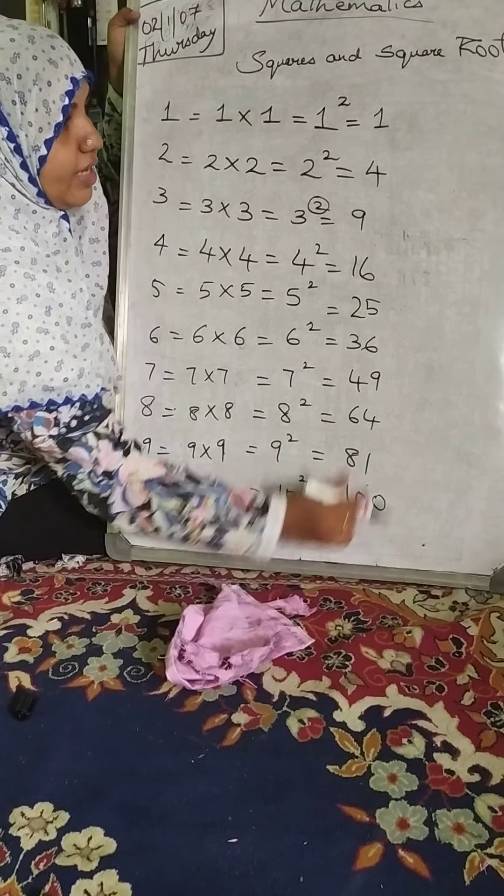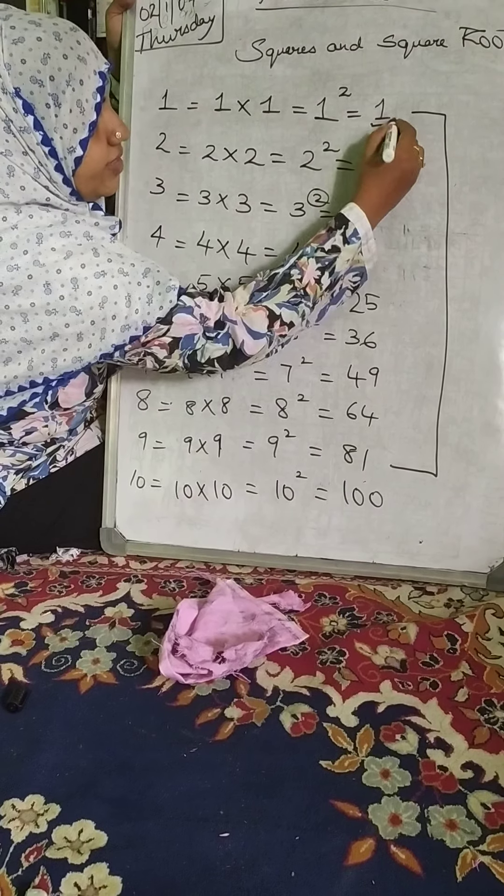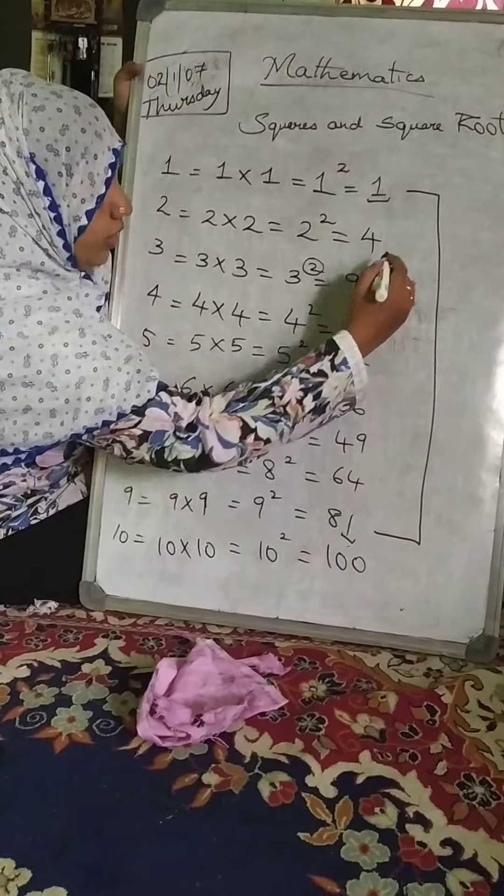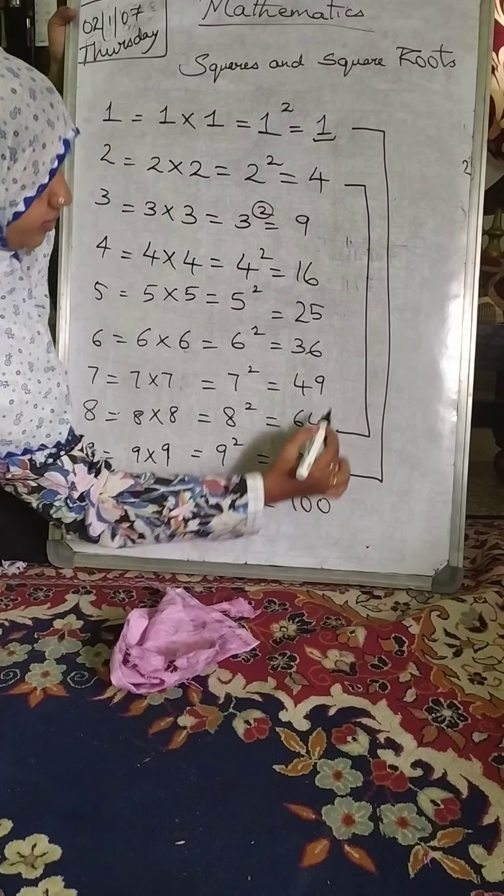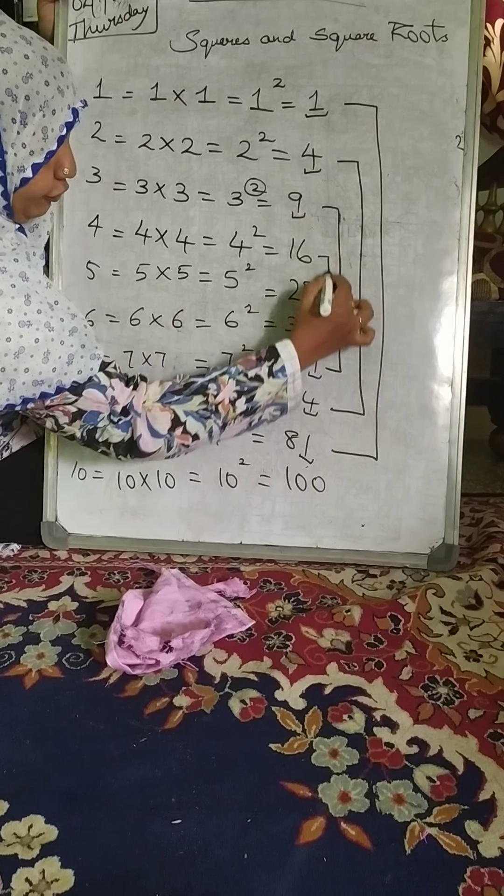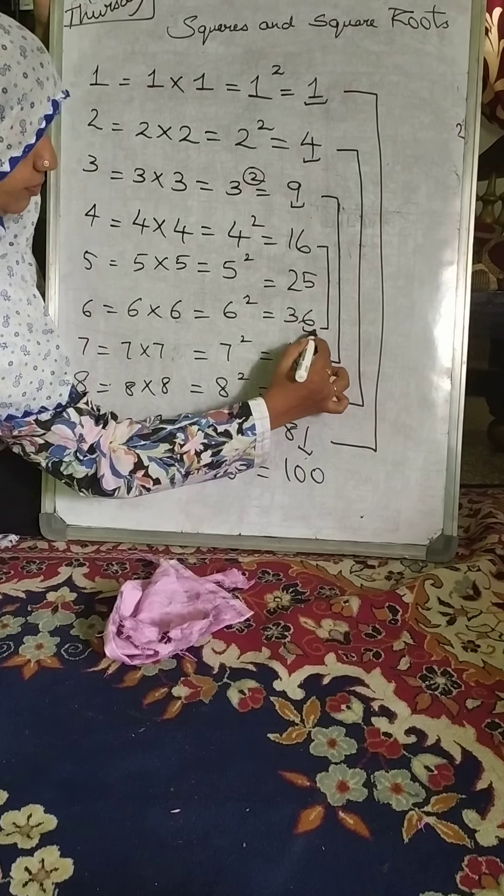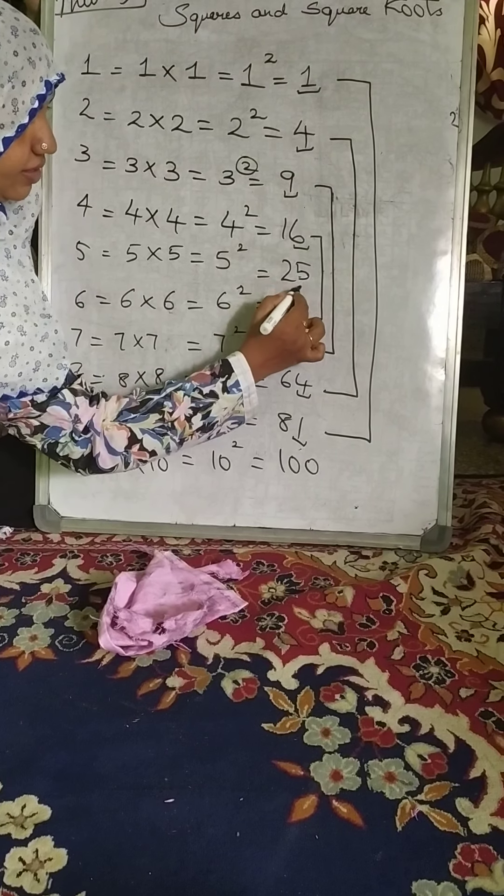Now one more trick is, you can see the connection here. 1 and 9, the units place is 1. 2 and 8 units place is 4. 3 and 7 units place is 9. 4 and 6 units place is 6 and for 5 you will always have units place as 5.